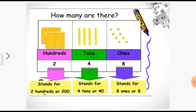Here, hundreds place has two, which stands for two hundreds, or written as 200. Four stands for four tens, or forty. And eight stands for eight ones, or simply the number eight.